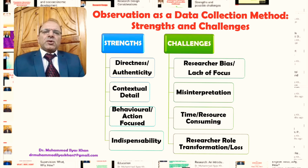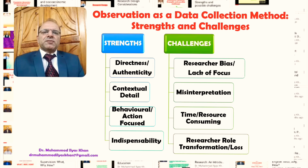Despite the importance and usefulness of this data collection method, observation has certain challenges or weaknesses. The first one is researcher bias. In many cases, the researcher might be collecting data keeping in view his or her own biases — focusing on certain aspects of the behavior or situation they are interested in, while ignoring other aspects of that particular reality. So there is a danger of researcher bias.